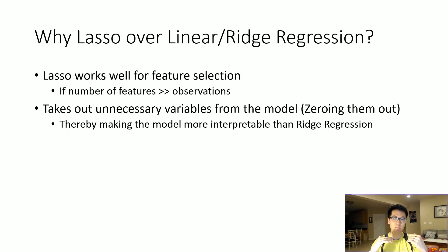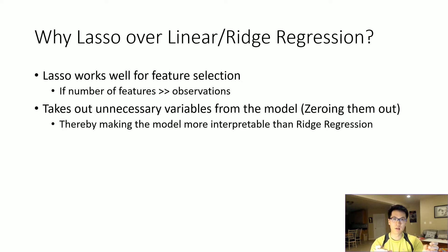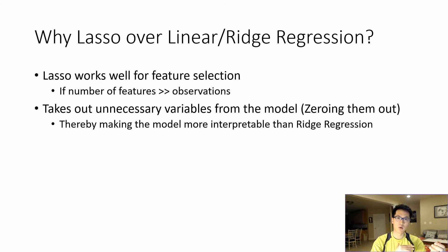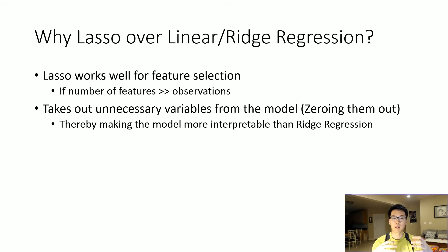It makes the model more interpretable than ridge, whereas with ridge the coefficients of its features will slowly inch towards zero but won't be exactly zero, thereby still keeping the overall model intact.